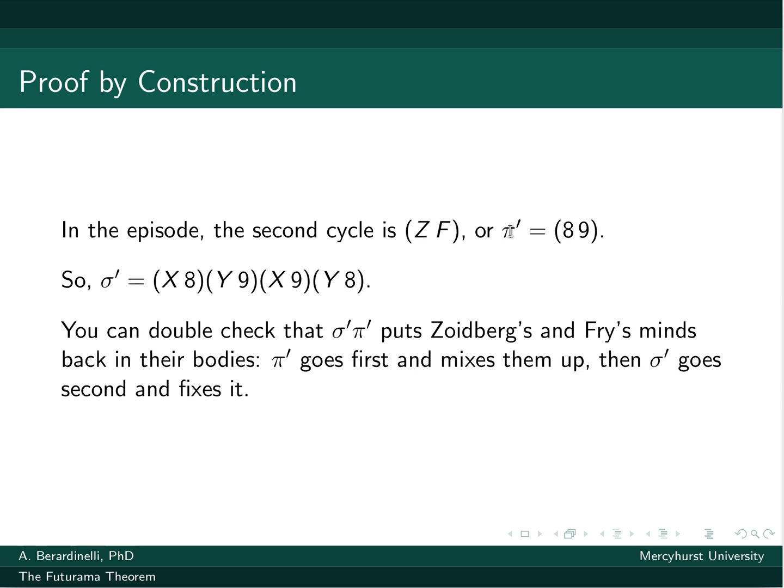But we're going to fix Fry and Zoidberg, too, so that actually ends up fixing the Globetrotter swapping problem as well. We have another cycle to consider, the 8-9 cycle, or the Zoidberg-Fry cycle. If you swap Globetrotter Y with Zoidberg, Globetrotter X with Fry, Globetrotter Y with Fry, and then Globetrotter X with Zoidberg, everyone is back where they belong.